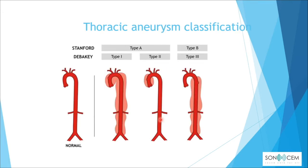For thoracic aneurysm classification, the Stanford classification uses Type A and Type B. Type A involves the ascending thoracic aorta, while Type B spares the ascending thoracic aorta and involves only the descending thoracic or abdominal aorta.